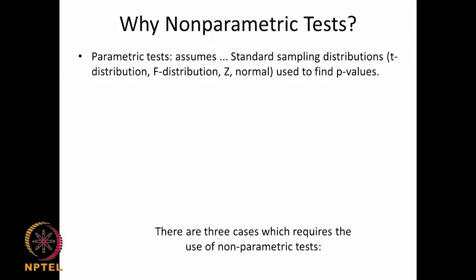Parametric tests assume a standard sampling distribution like your T distribution, F distribution, Z distribution, normal distribution. All these are called standard parametric tests and you have corresponding tables, and we used those tables to find out the p-values given the degrees of freedom and so on.